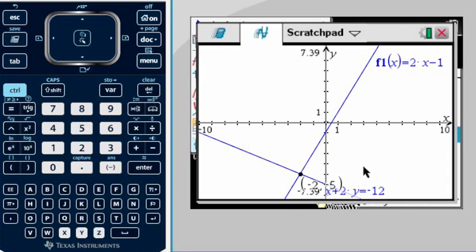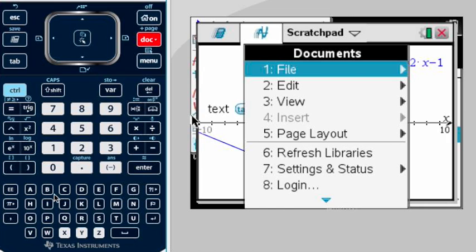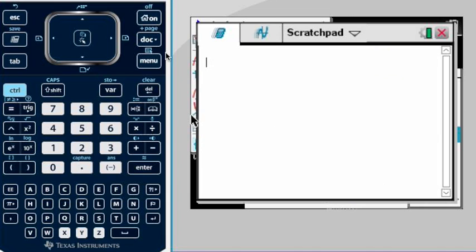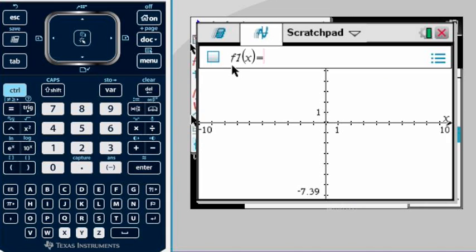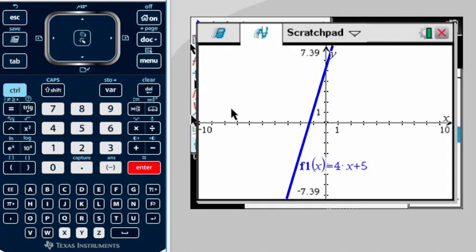Right here that will be our solution: (-2, -5). In other words, that's the intersection point. There's one more feature that I want to show you, so I'm going to clear this again.